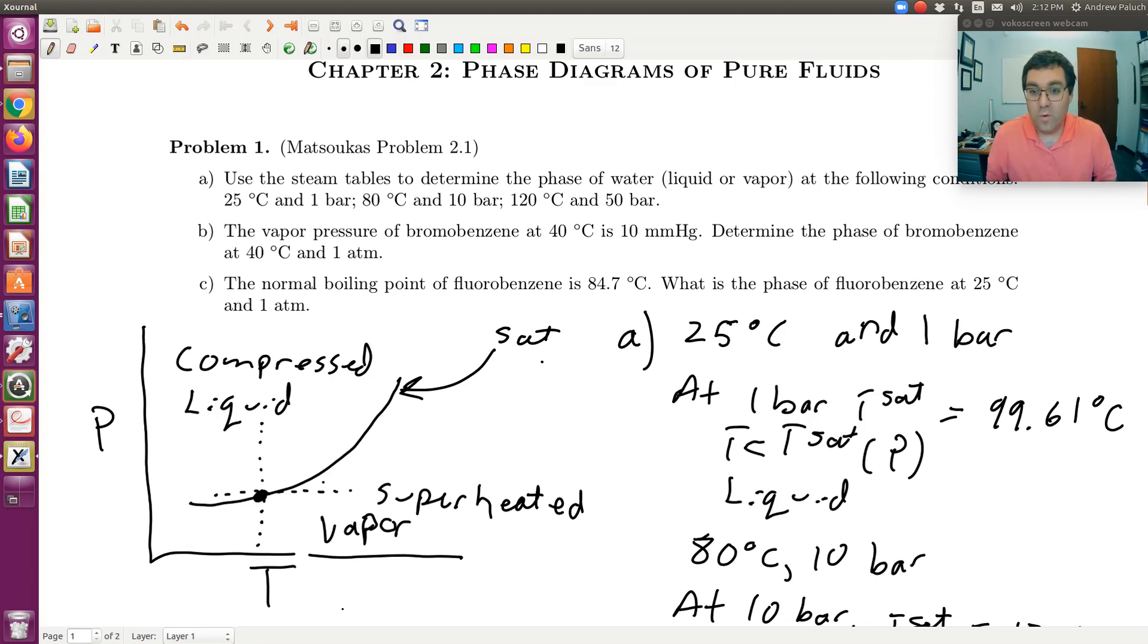Part C: the normal boiling point of fluorobenzene is 84.7 degrees C. Normal boiling point means the boiling point at 1 atm, atmospheric conditions. So at 1 atm, the saturation temperature is 84.7 degrees C. What is the phase of fluorobenzene at 25 degrees C and 1 atm? Well, since T is less than T_sat, it must be liquid. So essentially, all of them in problem 1 are liquids. But key here was just draw a picture. Try and make sure you understand how to read and interpret a phase diagram and then use that to determine your phase.